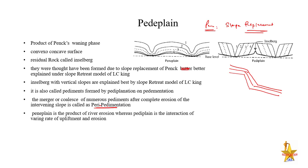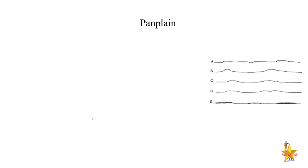Pediment is the product of river erosion, whereas Pediplain — which is Penck's contribution — is basically formed because of both upliftment and erosion. Penck's approach was a process-based approach, while Davis's theory was based on a historical approach or denudation chronology. This distinction is very important to keep in mind.